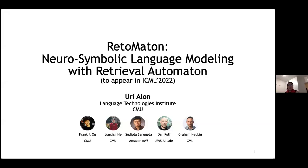This is Auré Alon. Thank you for coming in today. He's a postdoc at Carnegie Mellon University, working with Graham Neubig and also a lot of other people. He's going to present a sort of combination of neural network language modeling with KNN retrieval and automata somehow. So I assume it does good things, but I'll let Auré take it from here.